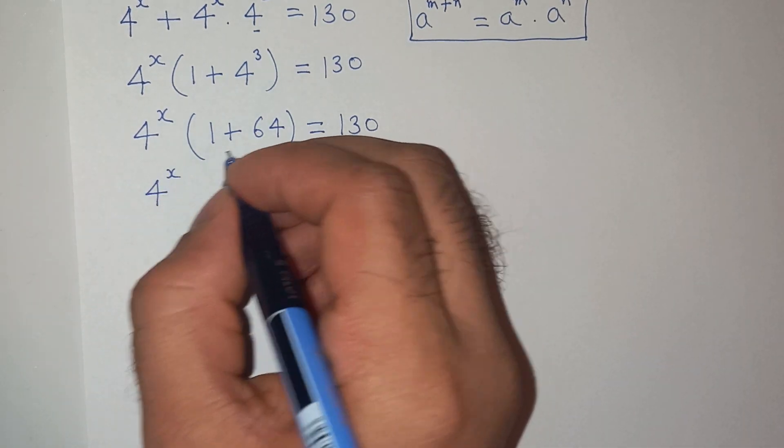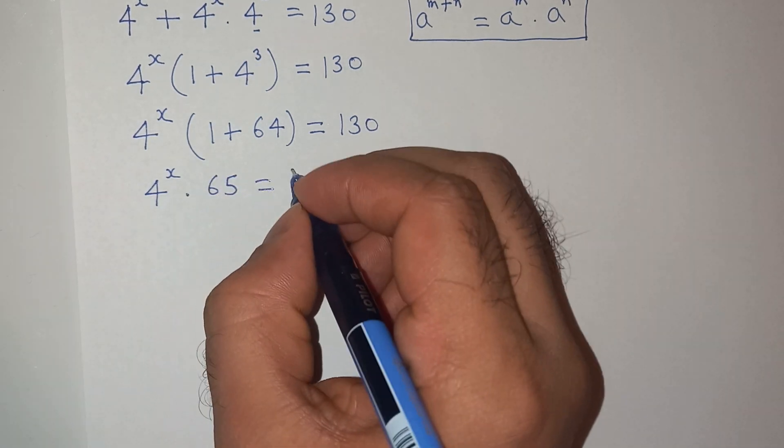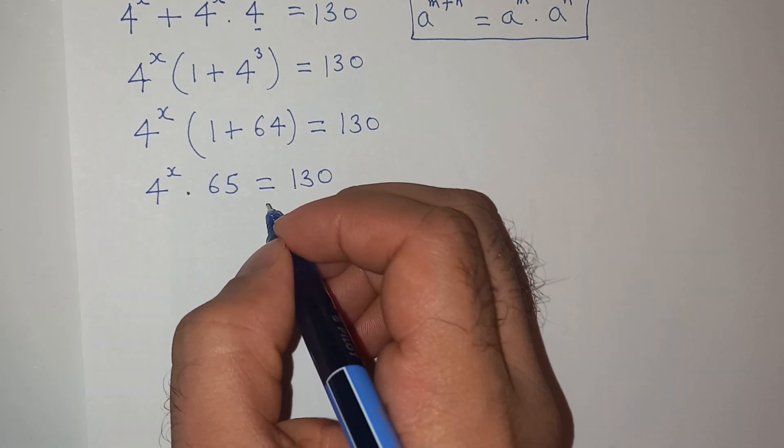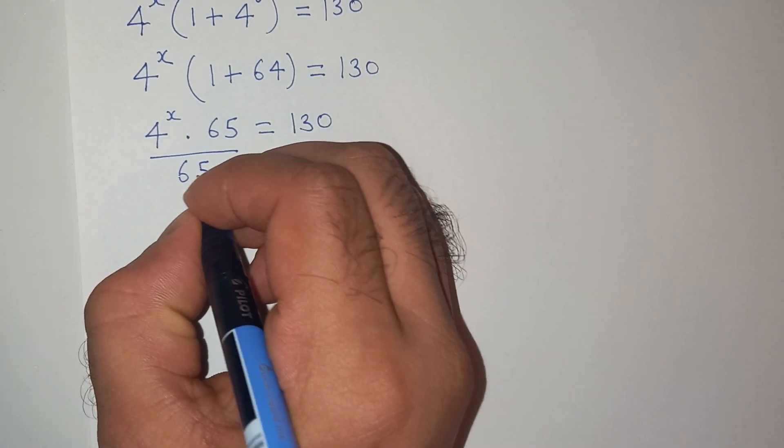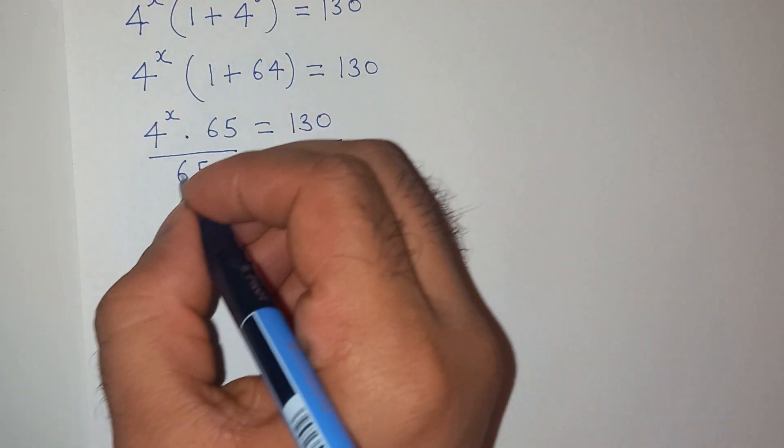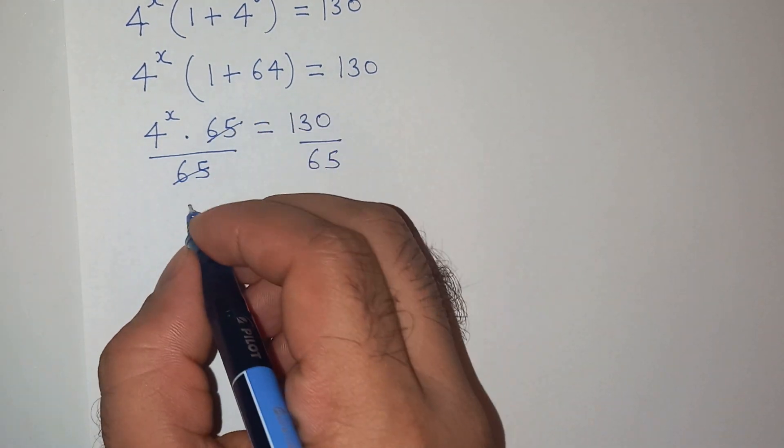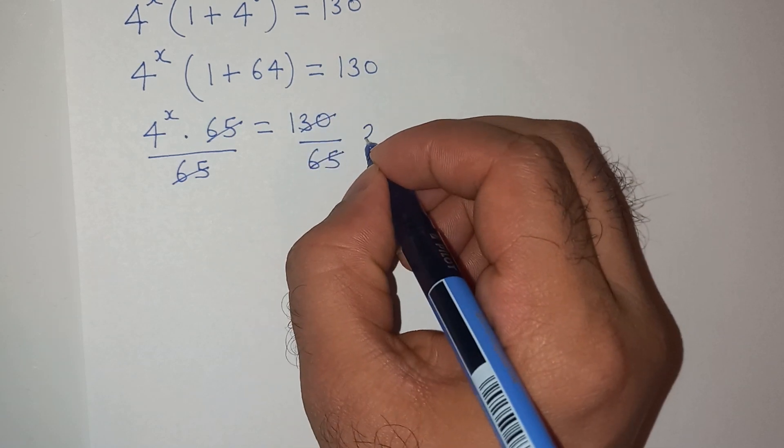We have 4 power x, 1 plus 64 is 65 equals to 130. Now, let's divide by 65 on the left hand side and on the right hand side. This 65 will cancel and 130 divided by 65 is 2.